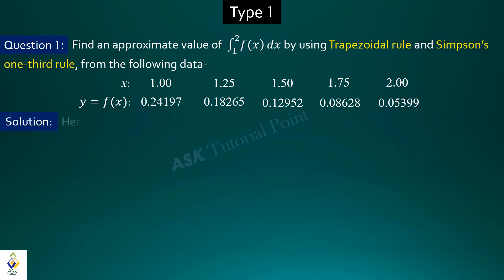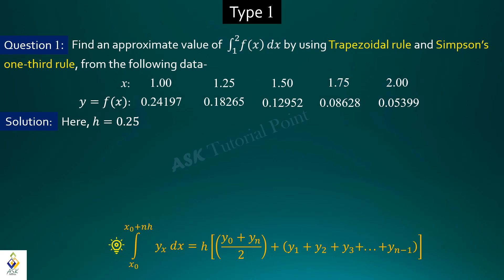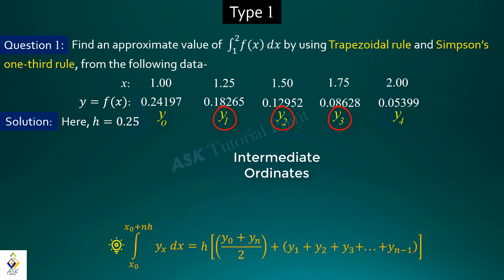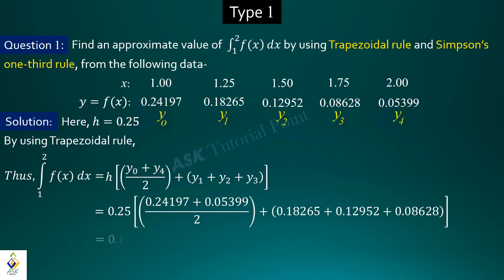I have a solution for this question. The interval of differencing h is 0.25, so the constant gap is 0.25. First, we apply the trapezoidal rule. H equals 0.25. We set up the ordinate block where Y0 and Y4 are the first and last ordinates, and Y1, Y2, Y3 are the intermediate ordinates. Placing the values in the trapezoidal rule formula, the approximate answer is 0.13661.